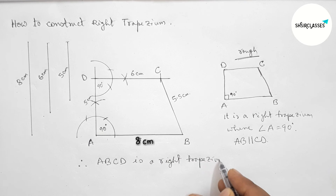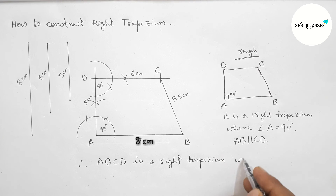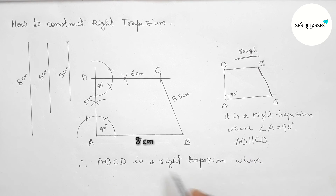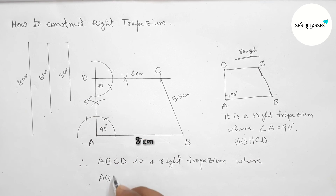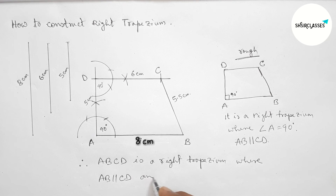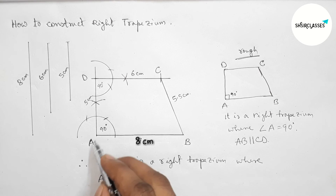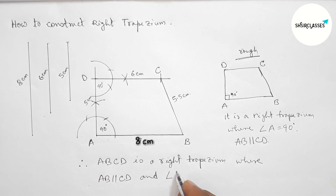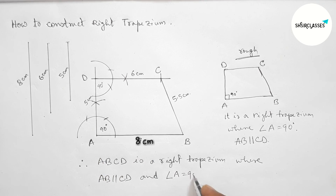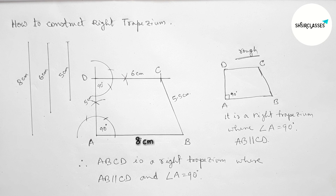So here ABCD is a right trapezium where AB is parallel to CD and angle A is 90 degrees. That's all — thanks for watching, please share it with your friends.